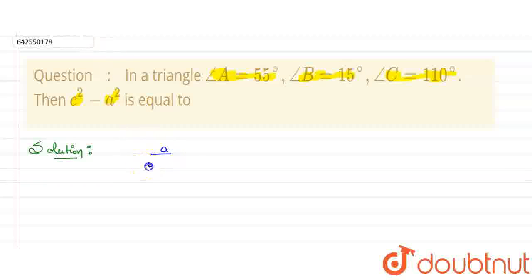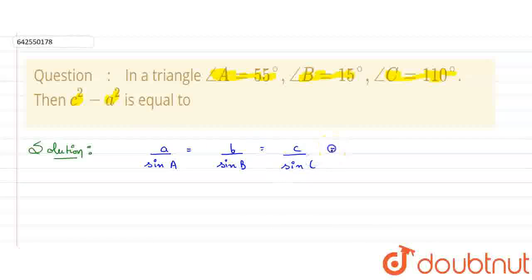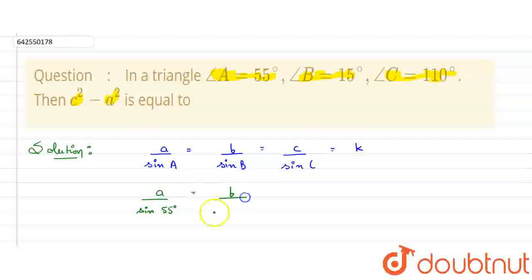We know that a upon sine A is equal to b upon sine B, and further it is also equal to c upon sine C. Suppose this is equal to variable K. Let's put the values: a upon sine 55 degrees equals b upon sine 15 degrees, equals c upon sine 110 degrees, and this equals K.